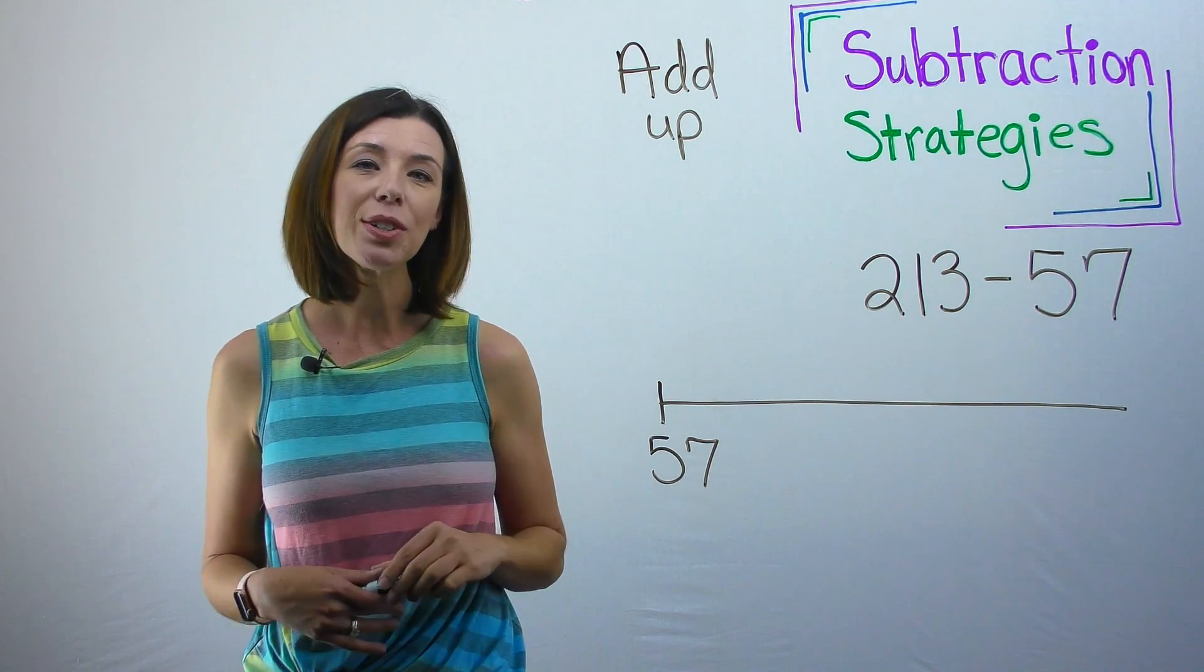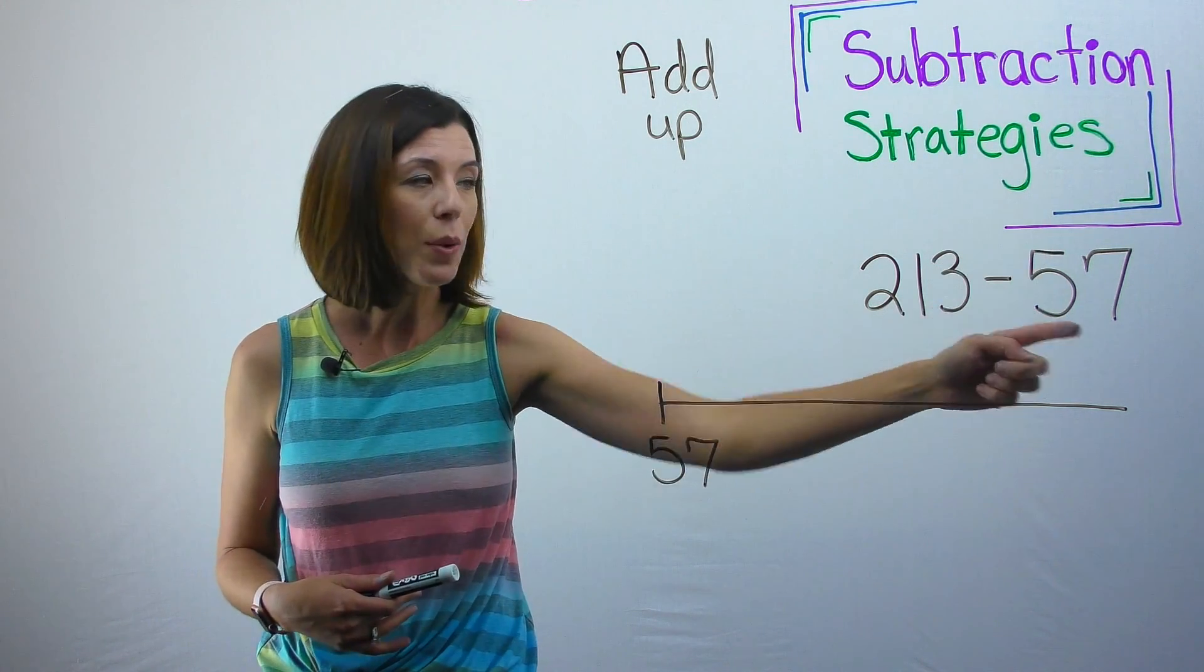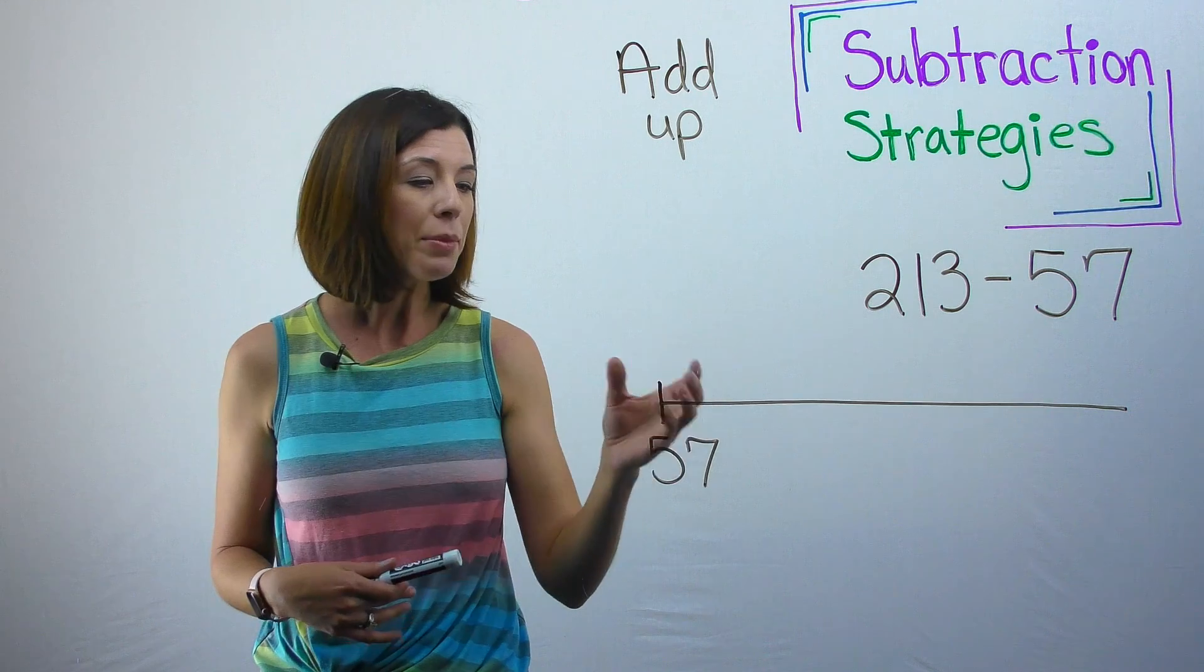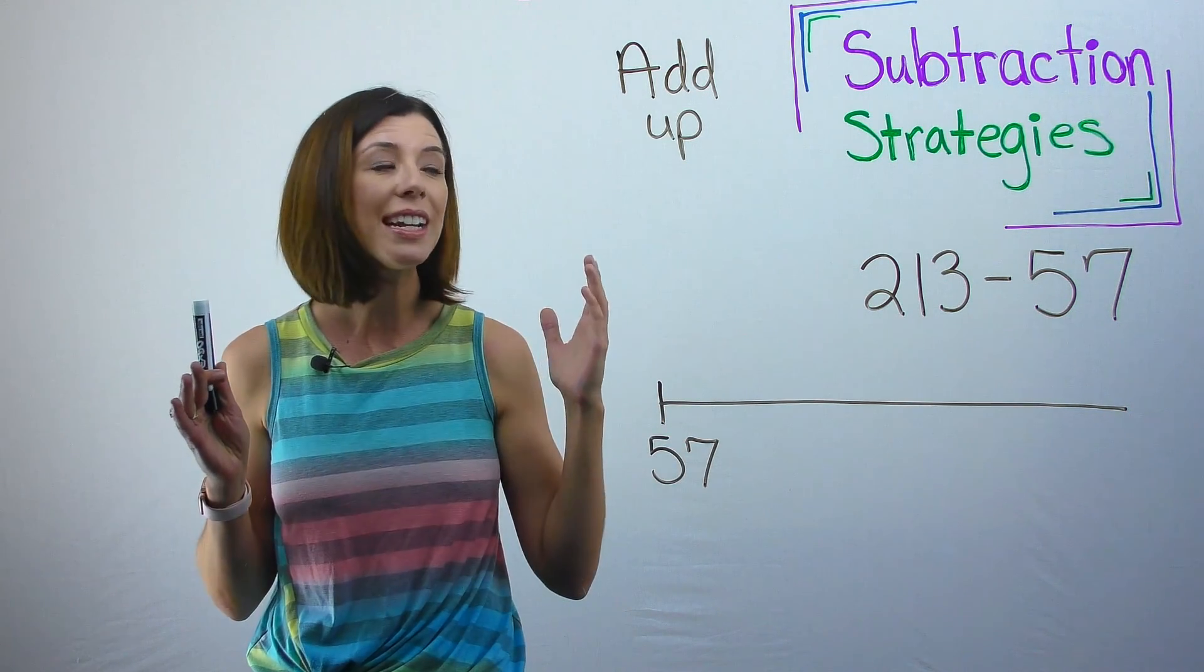So what we're going to do is we're going to start with the subtrahend. And again, the subtrahend is the number that we are taking away. In this case, it's 57. I'm literally going to be finding the distance between the numbers 213 and 57.